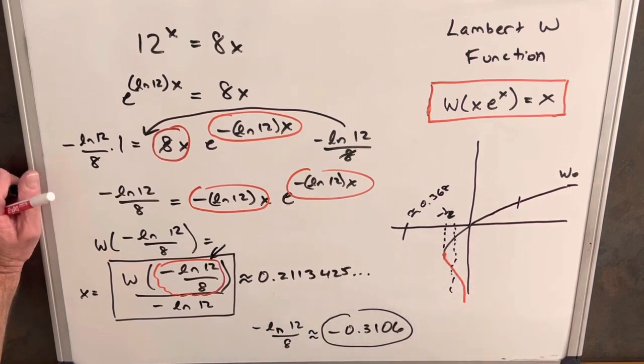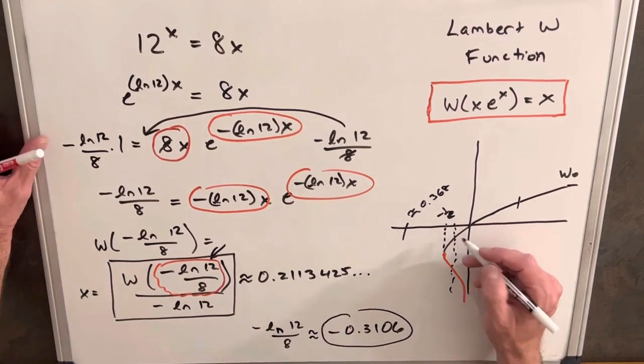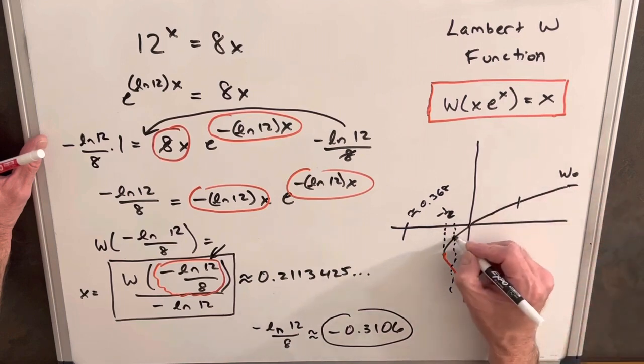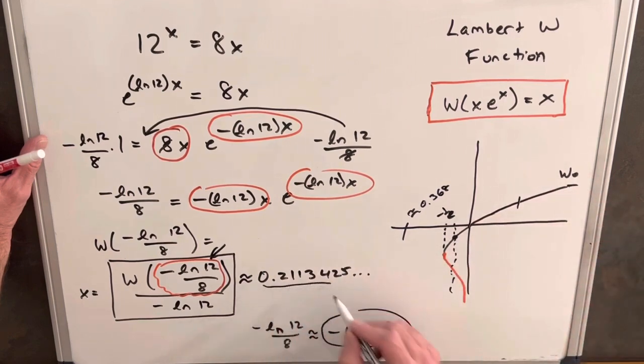So what we'll have is, we'll have our first answer on the principal branch, we'll have our first answer right here that we found, this 0.21 number.